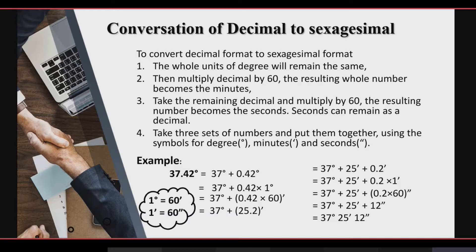When we convert it, in the first step we have 36 degrees plus 0.42 degrees. In the second step, we convert the decimal part to minutes: we multiply 0.42 by 60, and when we multiply them we get 25.2 minutes.